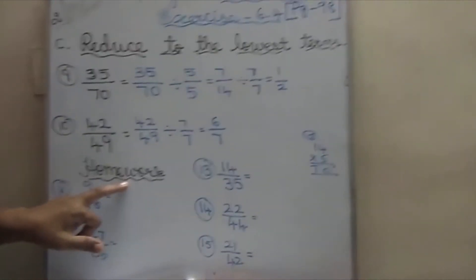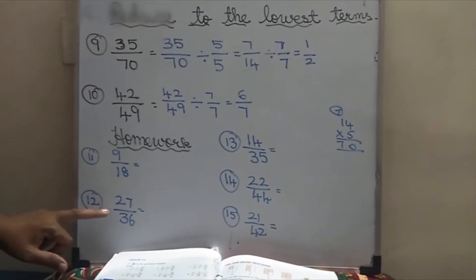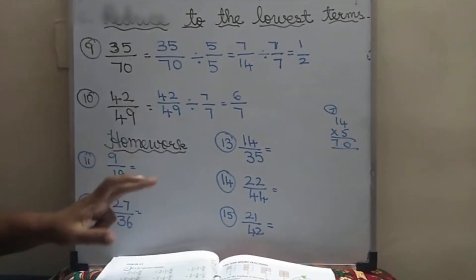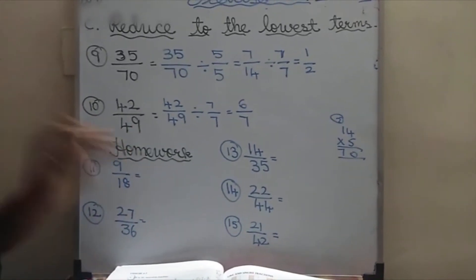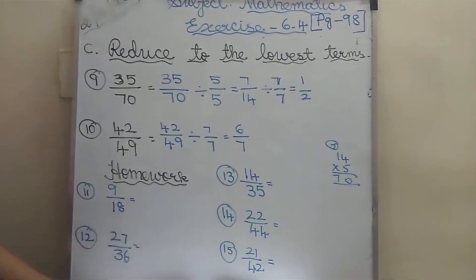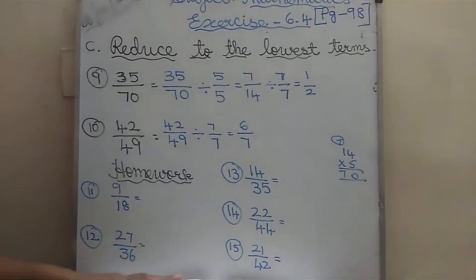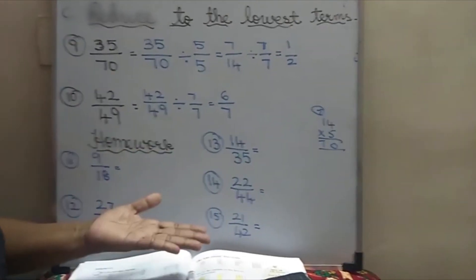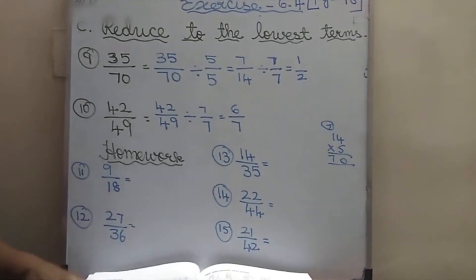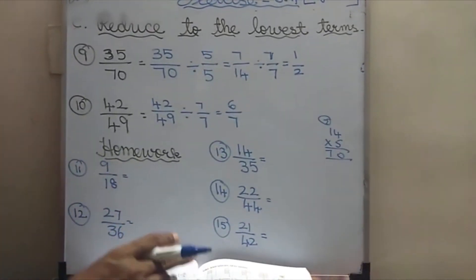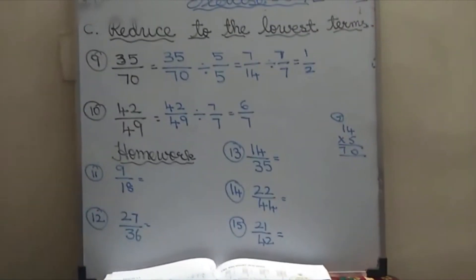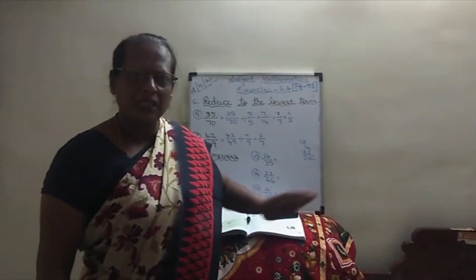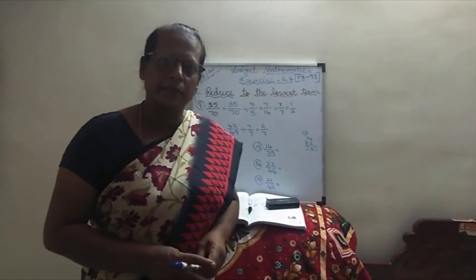10 sums I have taught and then I have given homework. The homework sums are: 9 by 18, 27 by 36, 14 by 35, 22 by 44, and 21 by 42 — these 5 sums you have to do. I am very much worried because many of them are not sending the homework — they are taking it for granted. Only few students are sending. All children should do — if you are doing only, you can learn mathematics. All of you do these 5 sums and send to my personal WhatsApp or Google Classroom. Are you thorough in exercise 6.4? If you have any doubt, you can ask me in the Zoom class. We will meet in the next class. Bye, thank you.